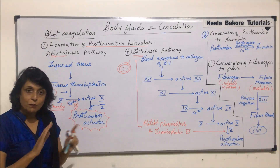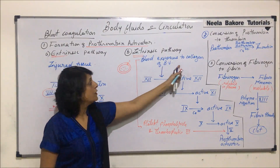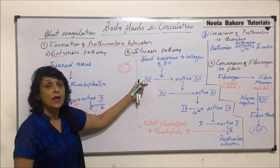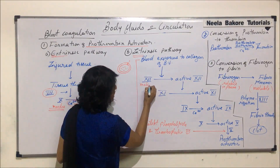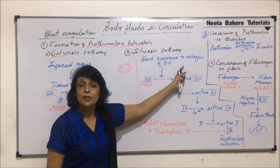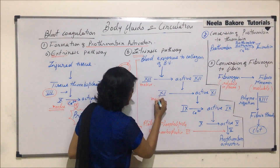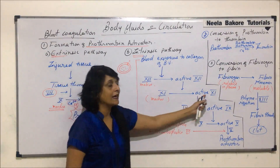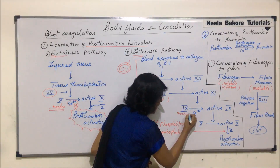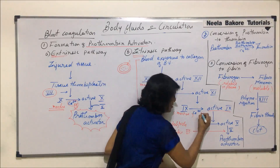In both cases, the blood vessels are getting damaged. When blood comes in contact with the collagen of the blood vessel, this pathway is triggered. Factor 12, which is inactive, gets activated in this situation. Activated factor 12 helps in the conversion of inactive factor 11 to active factor 11, and active factor 11 helps in conversion of inactive factor 9 to active factor 9. Calcium ions, which are factor 4, are also essential for this.